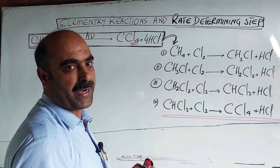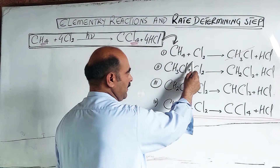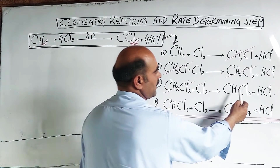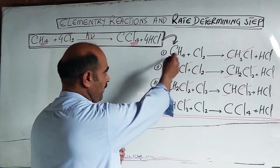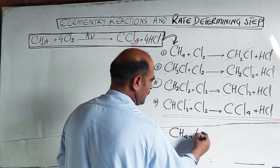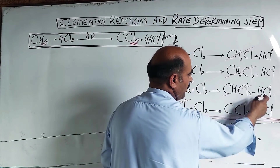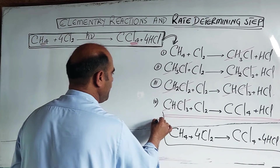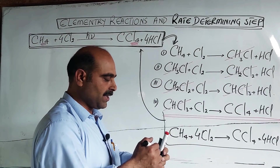The overall reaction is: CH4 plus 4 moles of Cl2 gives CCl4 plus 4 moles of HCl. The products formed in sequence are methyl chloride (CH3Cl), dichloromethane (CH2Cl2), chloroform (CHCl3), and finally carbon tetrachloride (CCl4). This net reaction is 100% similar to the original overall equation. That confirms the overall reaction equals the sum of all elementary steps.